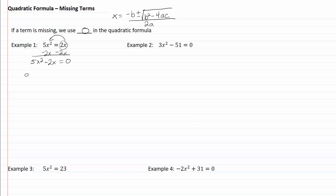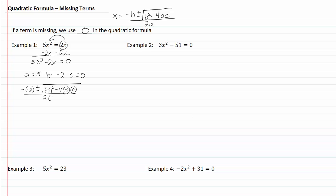Our a term is our squared term, so that will be 5. Our b term is going to be negative 2 — it's always going to be the x term — and our c term will be zero. When I plug this into the formula, I get negative negative 2 plus or minus the square root of negative 2 squared minus 4 times a, which is 5, times c, which is zero, all over 2 times a, which is 5.